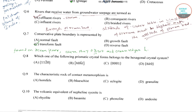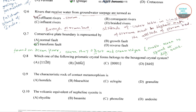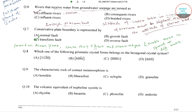Transform faults enable the ocean to spread at different rates. So the conservative plate boundaries are represented by transform faults, which are mainly found on ocean floors where they offset mid-ocean ridges and enable the ocean to spread at different rates. The correct answer is option number C.